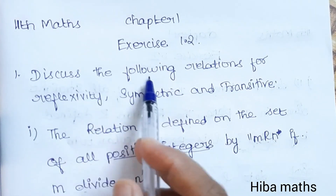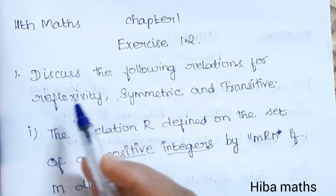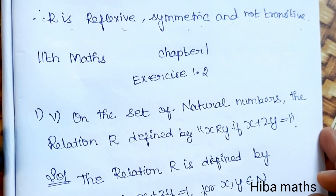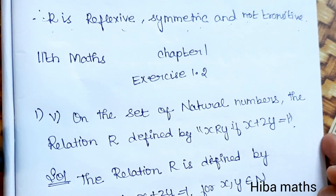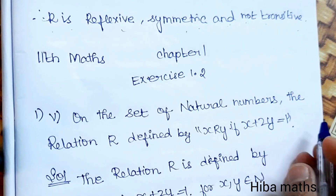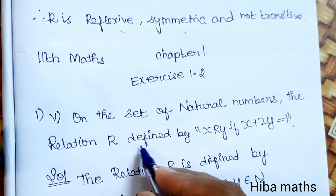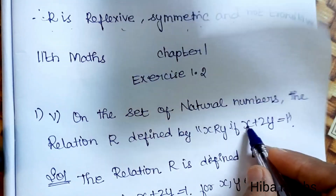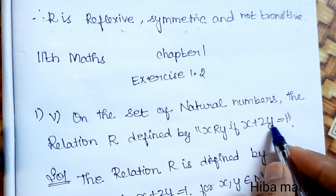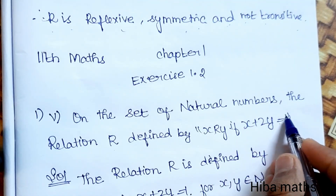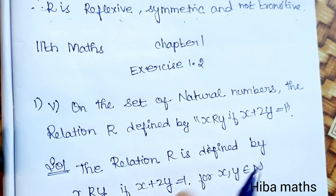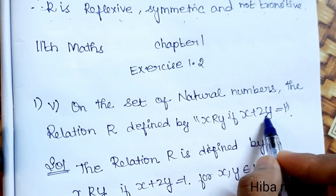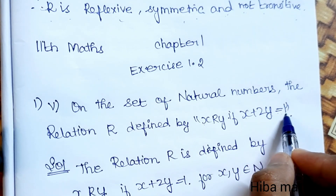First question: discuss the following relation for reflexivity, symmetric and transitive. Fifth subdivision — on the set of natural numbers, the relation is defined by x relates y if x plus 2y is equal to 1.